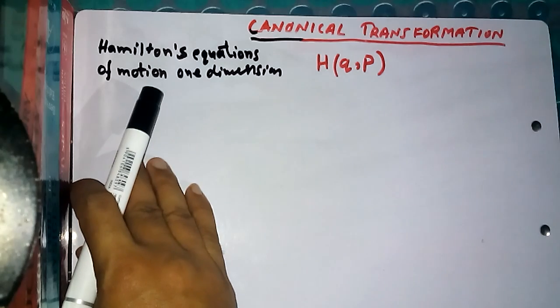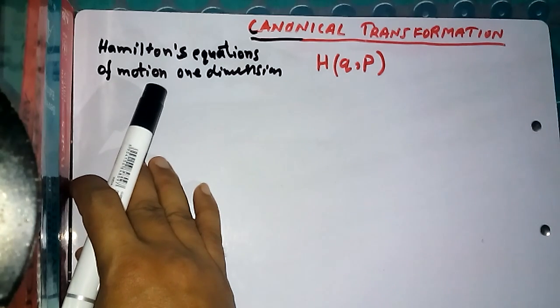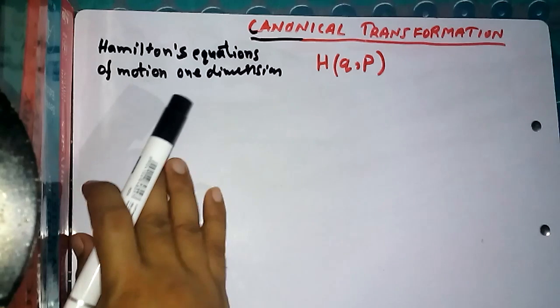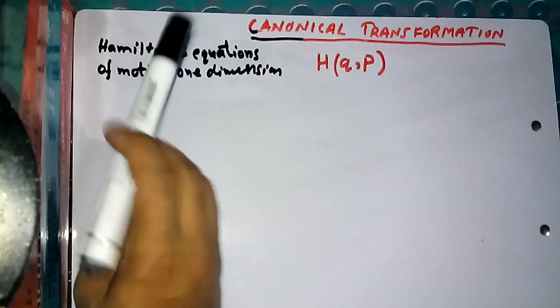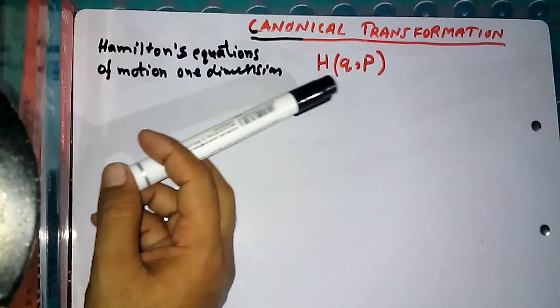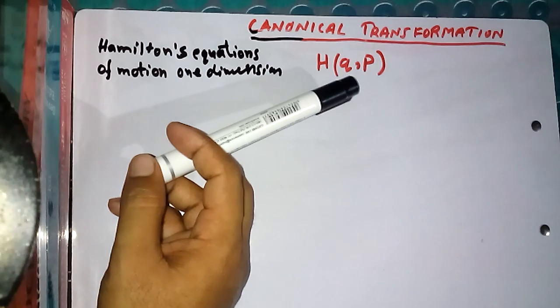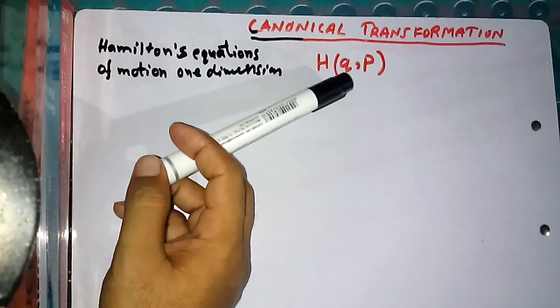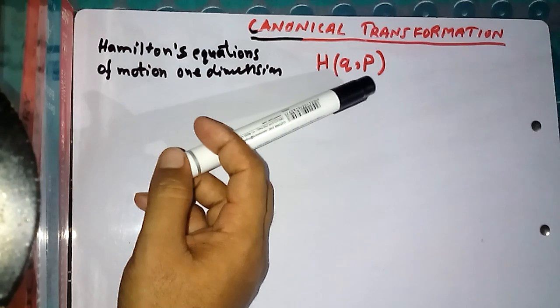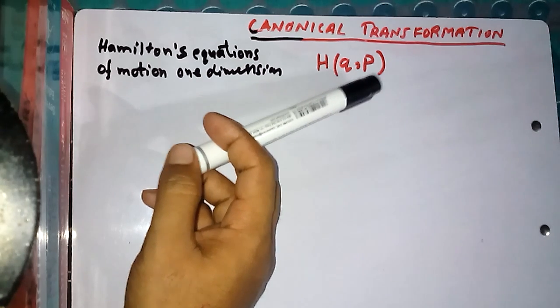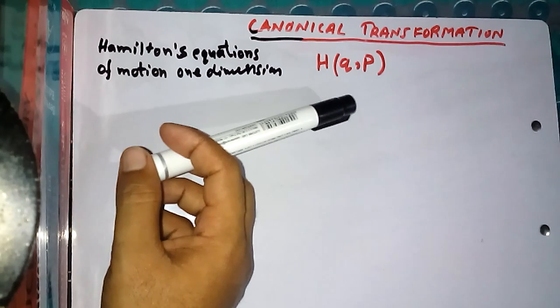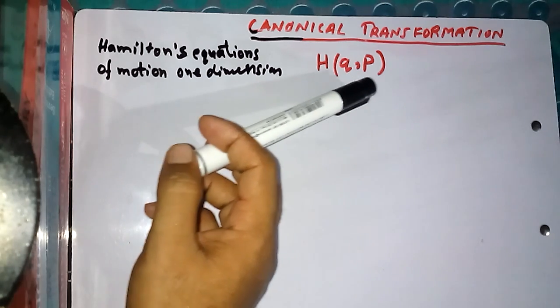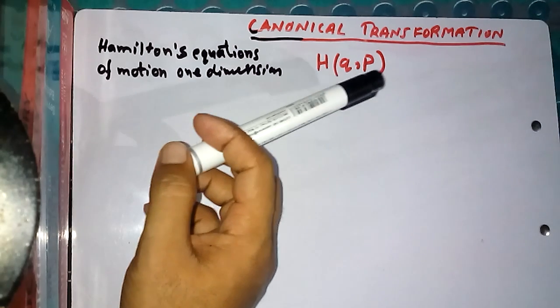Hello friends, this is Vidhan. Welcome to my channel. Today we will not solve any problem of CSIR NET, but we will see the canonical transformation concept. For that, we have taken a Hamiltonian which is a function of Q and P. Q and P are called canonical phase space variables. Q is specially called generalized coordinate, P is called the generalized momentum or conjugate momentum. Canonical transformation is when Q transforms to capital Q and P transforms to capital P.